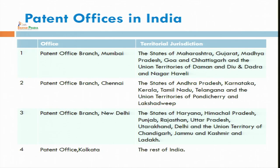There are four offices of patents in India where we can file a patent application. India is divided into four zones, and the states are also divided into four zones. The zone of Mumbai includes Maharashtra, Gujarat, Madhya Pradesh, Goa, Chhattisgarh, and the Union Territories of Daman and Diu and Dadra and Nagar Haveli.